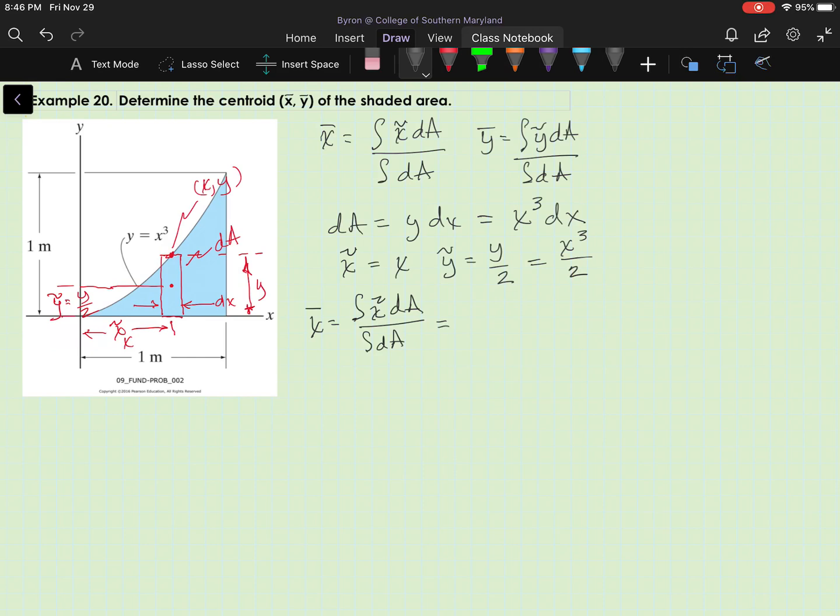In this last step, where I'm actually calculating x bar, I need to make sure I have everything in terms of x. Since I have a vertical element, I'm integrating with respect to x, and I need to determine my limits of integration. So, the numerator is going to be, I'm going to integrate from 0 to 1. How do I know that? Because I'm interested in the area under the curve between the y-axis and the value of x of 1 meter. x tilde is x, I got that from right here,